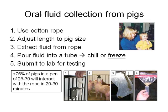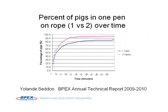We always recommend freezing the sample immediately — it won't hurt PCRs or antibody assays, and you get great preservation. In our experience, in a classic pen size of 25 to 30, about 75% of the pigs will be on the rope within a 20–30 minute period. Research coming out of England shows similar results — Yolanda found that with one rope you get about 75% of pigs interacting, but if you put two ropes in a pen, you get 90% of pigs on one of those two ropes within that 20-minute period.